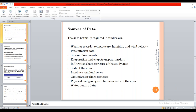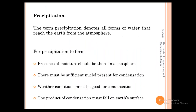Moving on to precipitation — since this is only the introduction to water resources engineering, we will cover the precipitation part today. The simple definition of precipitation is: all forms of water that reach the earth from the atmosphere. For precipitation to form, favorable conditions must be present: moisture in the atmosphere, sufficient nuclei for condensation, favorable weather conditions for condensation, and the product of condensation must fall on the surface.